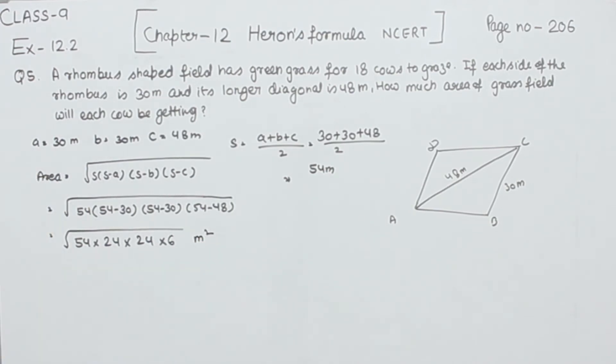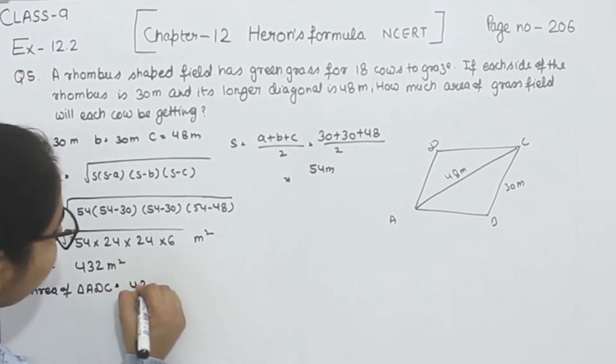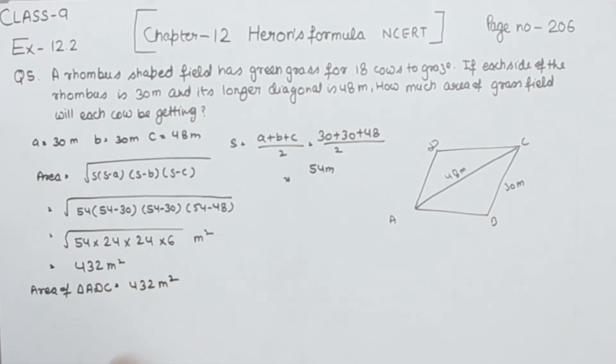Now we are going to solve this root, so we get the value as 432 meter square. This is the area of one triangle, the area of triangle ADC, which is equal to 432 meter square.